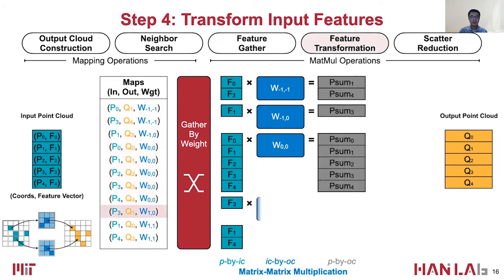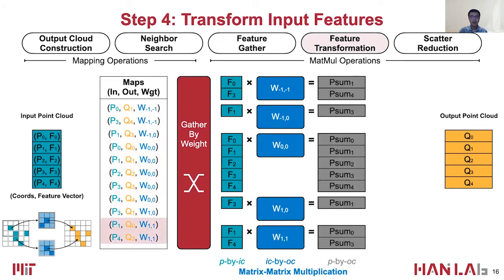That is, the fully connected layer to transform the input features. The shape of the input matrix is the number of points by the number of input channels. The shape of the weight kernel matrix is the number of input channels by the number of output channels. These weight kernel matrices can be shared. Furthermore, one can apply more than one fully connected layer here; such matrix multiplication can be repeated multiple times.